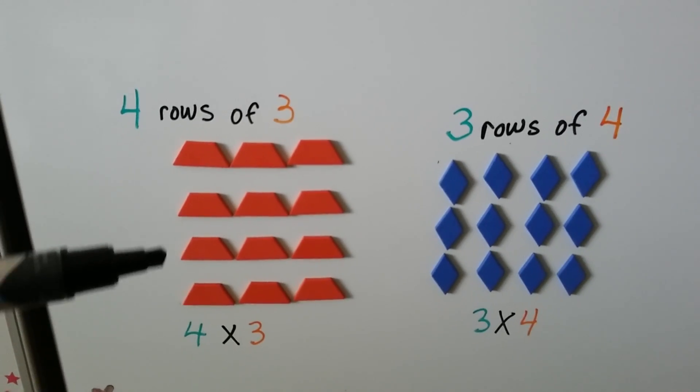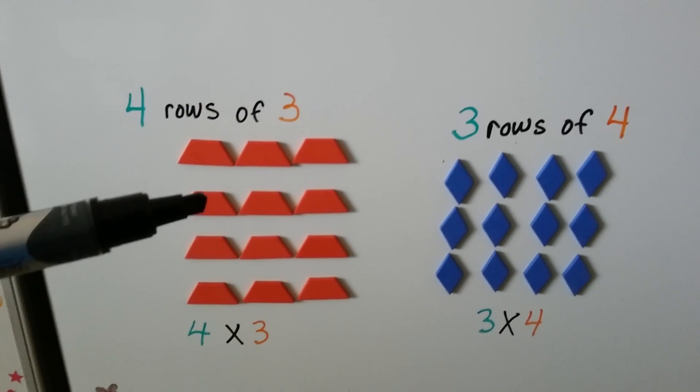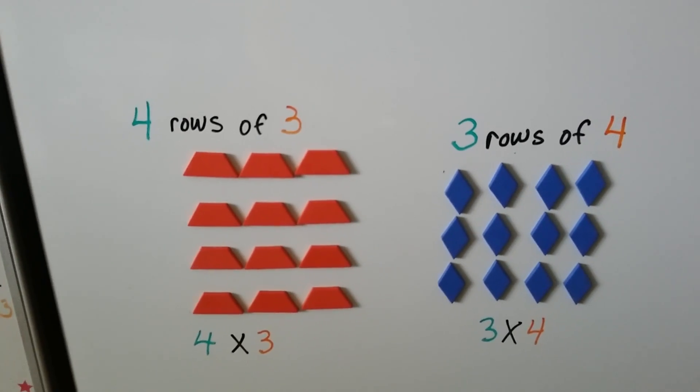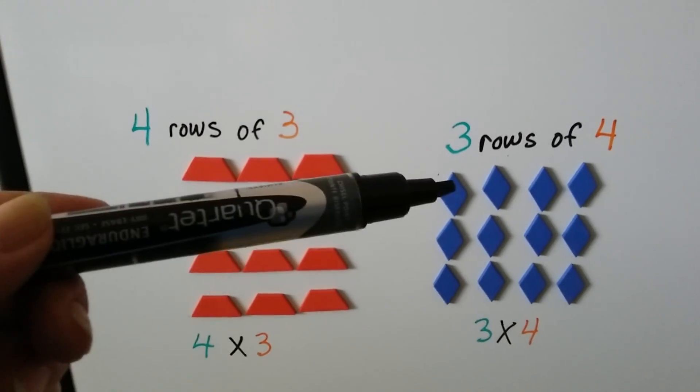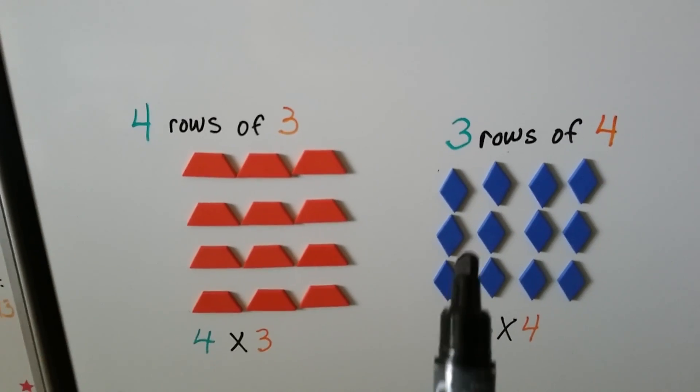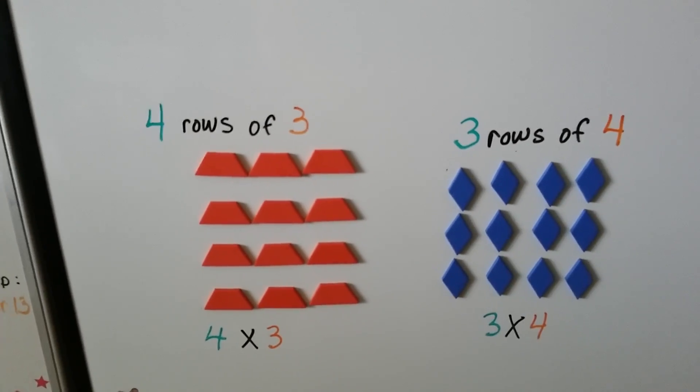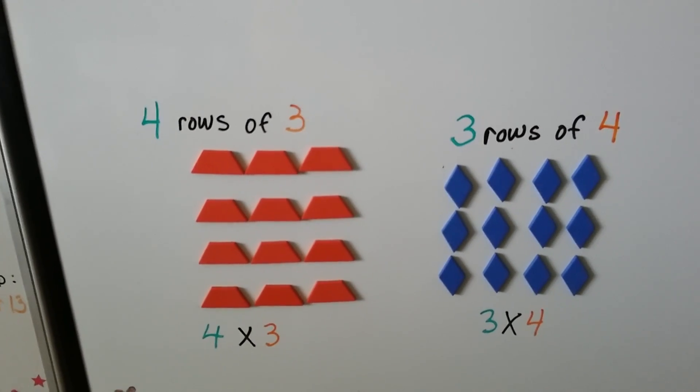Here we have 4 rows of 3. 1, 2, 3, 4. 1, 2, 3 columns. And 3 rows of 4. 1 row, 2 rows, 3 rows, and 4 columns. 3 times 4. So 4 times 3 and 3 times 4.